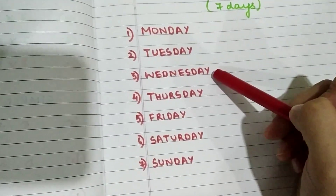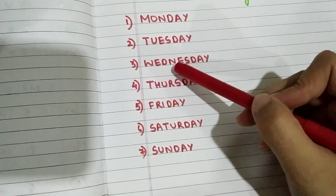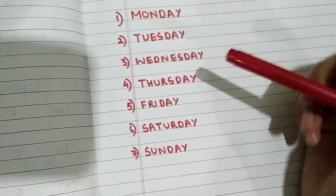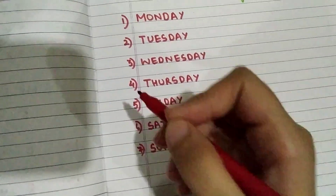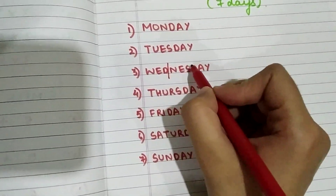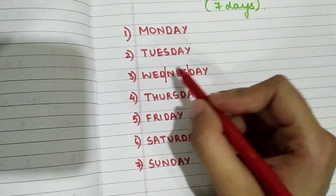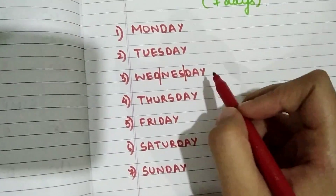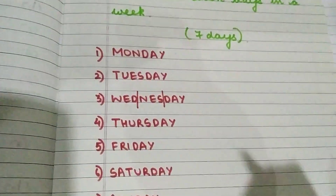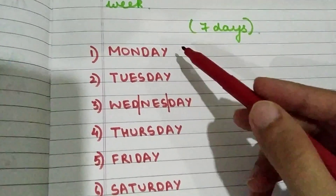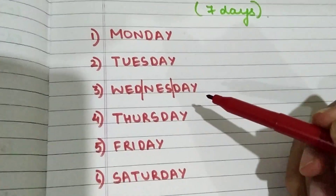Now let us come to the third day. The third day of the week is Wednesday. W-E-D-N-E-S-D-A-Y. As the spelling of Wednesday is big, you can divide it into three parts: W-E-D, N-E-S, D-A-Y. Wednesday. So Wednesday is the third day of the week. The first day was Monday, the second day was Tuesday, the third day was Wednesday.